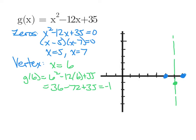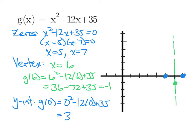We can also find the y-intercept quickly. To find an x-intercept we let y equal 0; to find a y-intercept, we let x equal 0. So find g of 0: 0 squared minus 12 times 0 plus 35 gives a y-intercept at 35 — way up there, outside the range of our graph. But we have enough to come up with a good graph of the parabola.